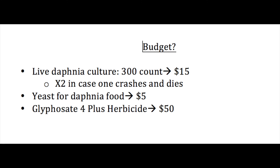In terms of budget, we need live Daphnia at $15 per culture, and we're going to need two of these in case one culture dies. We also need yeast for the Daphnia's food source, which is about $5, and then we need the glyphosate-4-plus herbicide, which is $50. We're giving ourselves about a $100 budget for some leniency in case something goes wrong or we need something else.